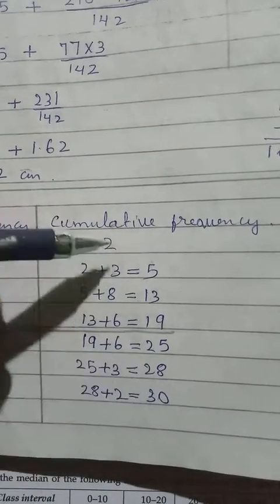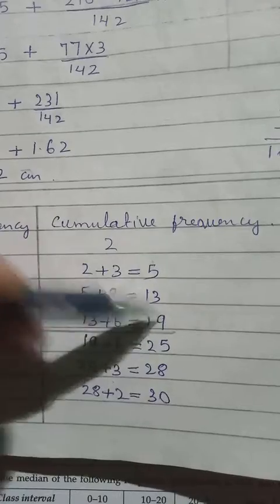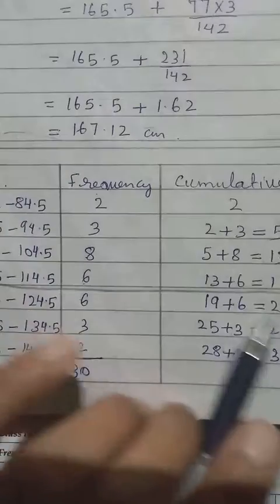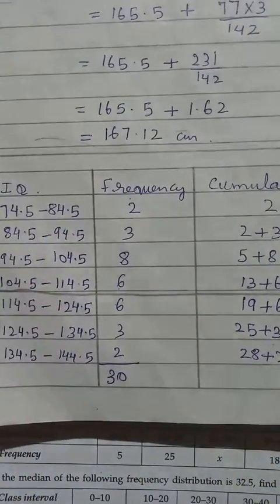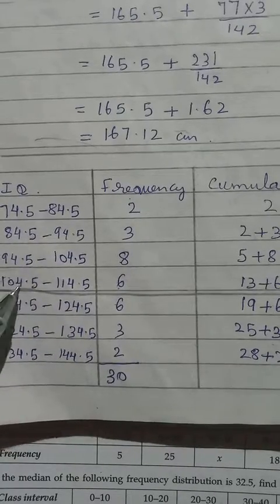So a number from here, which is greater than 15 is 19. So now this one become the median class.